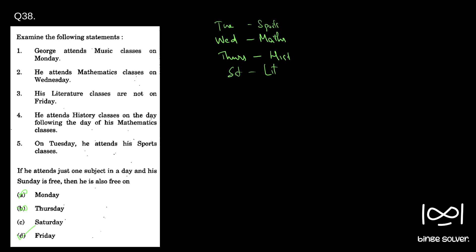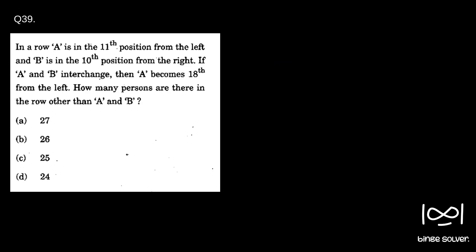Moving on to the next question, question 39. In a row, A is in the 11th position from the left and B is in the 10th position from the right.